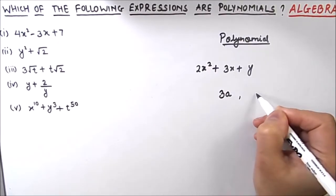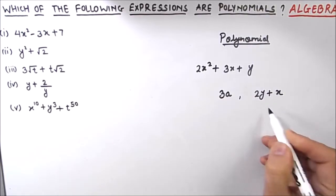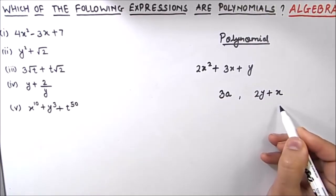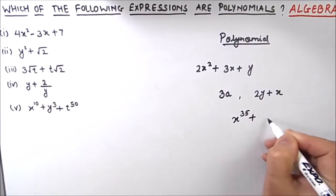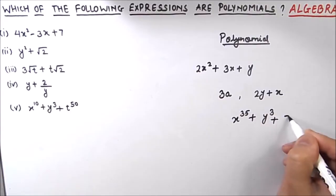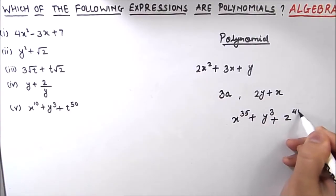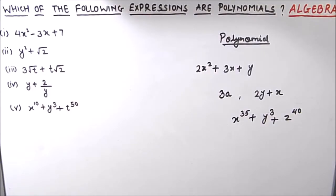We can also have an expression having two terms, 2y plus x, and this is also a polynomial. So x to the power 35 plus y to the power 3 plus z to the power 40 is also a polynomial. So polynomials are expressions involving a sum of powers in one or more variables multiplied by the coefficients.